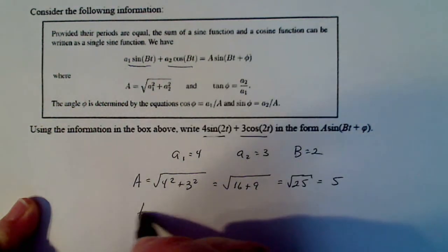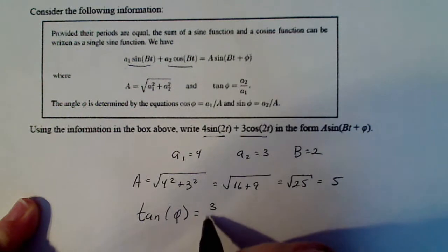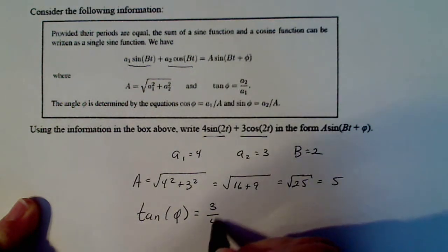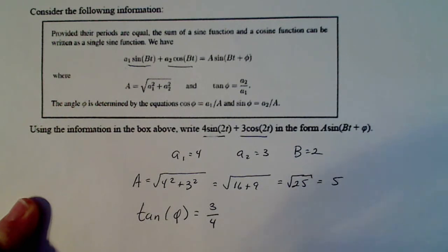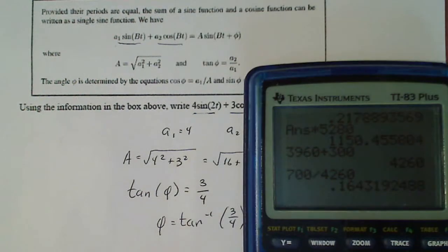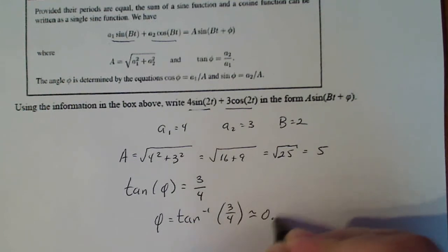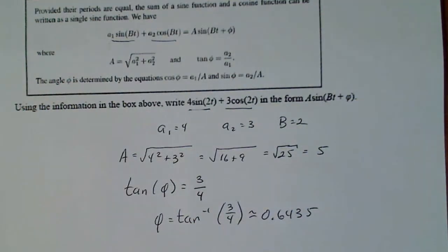Now phi, tangent of phi is equal to a2 divided by a1. Now, 3 quarters isn't anything that's standard on a unit circle, so we can go ahead and use our calculator and find phi. So this means that phi is equal to tangent inverse, or arctan, however you want to say it, of 3 quarters. I'm just going to pop that in my calculator. Second tangent inverse of 3 divided by 4. And that gives me a number of 0.6435.